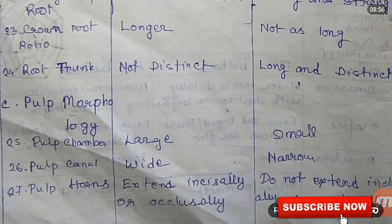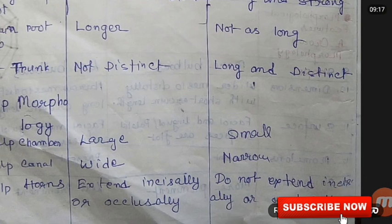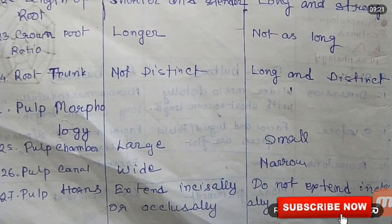Regarding pulp morphology: the pulp chamber is large in deciduous teeth and small in permanent teeth. The pulp canal is wide in deciduous teeth and narrow in permanent teeth. The pulp horns extend more incisally or occlusally in deciduous teeth compared to permanent teeth.